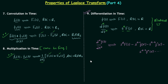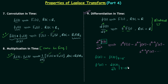Let's clarify the terms in this Laplace transform. F(s) is the Laplace transform of time domain signal f(t). f(0−) is the value of f(t) at t = 0−, meaning t is just less than 0. f'(0−) is the first derivative of f(t) evaluated at t = 0−, and f''(0−) is the second derivative of f(t) evaluated at t = 0−.